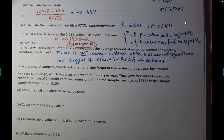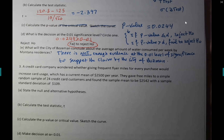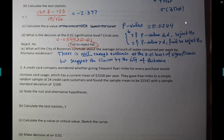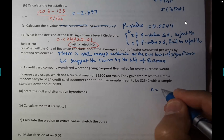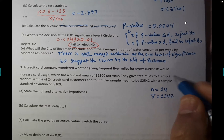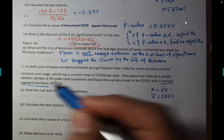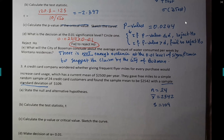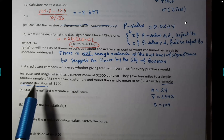Next problem: A credit card company wondered whether giving frequent flyer miles for every purchase would increase card usage. The current mean spending is $2,500 per year. They gave free miles to a simple random sample of 24 credit holders and found a sample mean of $2,542 and a sample standard deviation of $109. Since it says 'sample standard deviation,' you cannot say sigma — it's s, so this is a t-test.